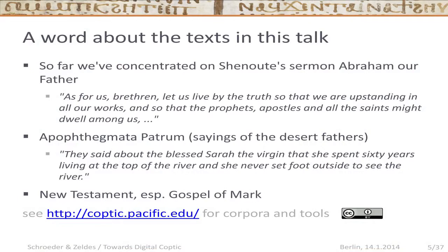To give you a sense of what the texts we're working with are like: we've worked on Shenoute's texts. One of his more interesting sermons is 'Abraham our Father,' a sermon read to the monks in a monastery drawing analogies between the lives of the patriarchs and people living in the monastery. A sample excerpt: 'As for us, brethren, let us live by the truth so that we are upstanding in all our works, and so that the prophets, apostles, and all the saints might dwell among us.' It's a very direct text with a lot of direct speech to the audience, but it also has long narrative parts describing the lives of the patriarchs.